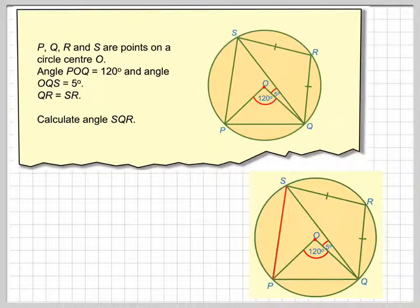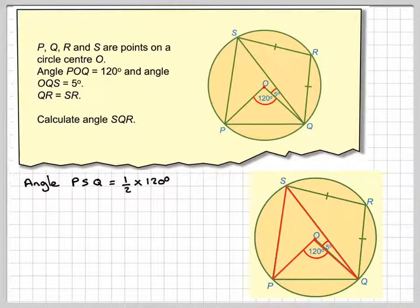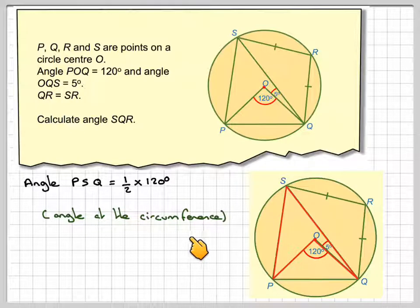So first of all, if we're going to draw this in here, angle PSQ is one half of 120, which is the angle at the circumference, so we're going to calculate this angle here, PSQ, which is 60 degrees. Also going to mark on here the angle that we're going to try to find, which is this one here.